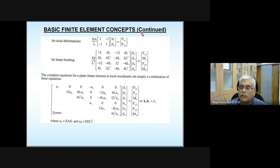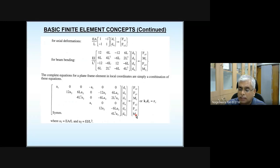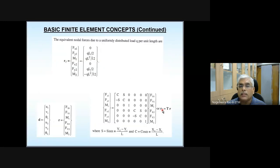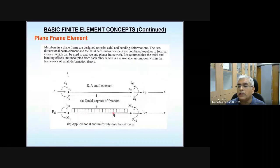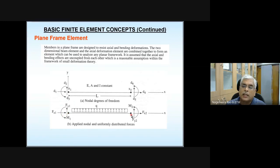Before proceeding, the definitions are given: KL is the local stiffness matrix, dL is the local displacement vector, and rL is the local force vector. If you have a distributed load acting in the upward direction, the equivalent nodal values can be written. Since only transverse load is applied with no axial load, Fx1 and Fx2 are zero. Fy1 and Fy2 come from reactions, and M1 and M2 come from moments.